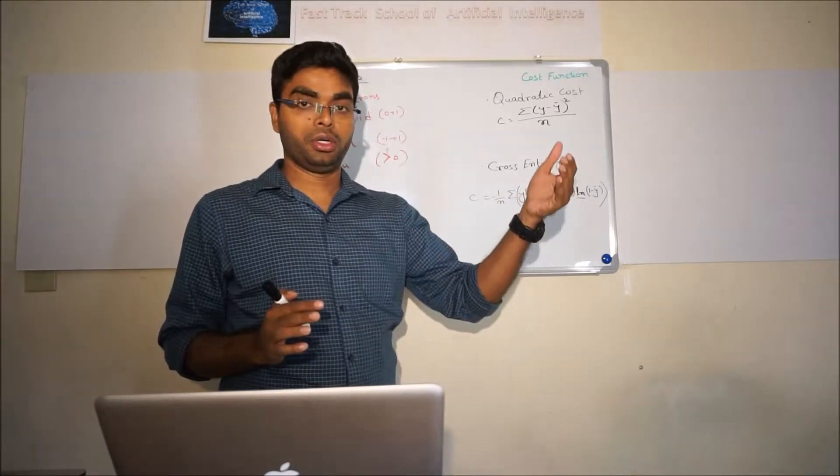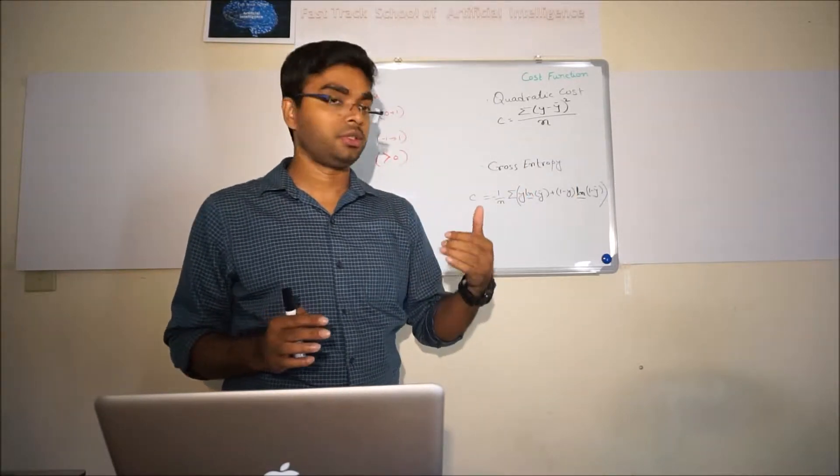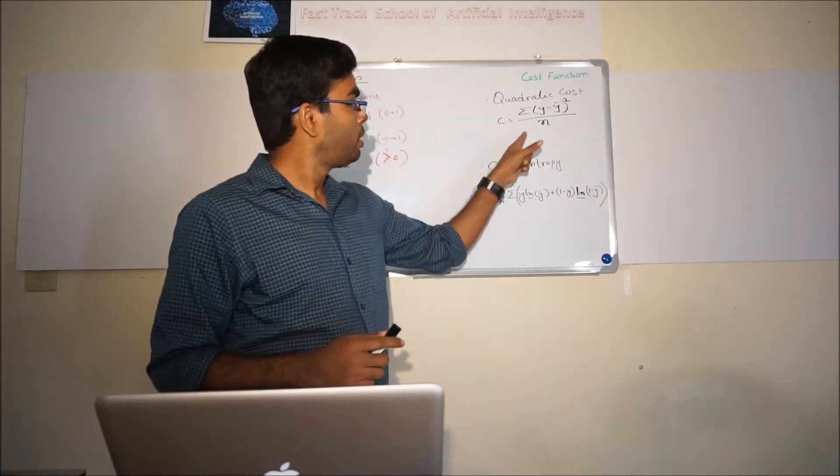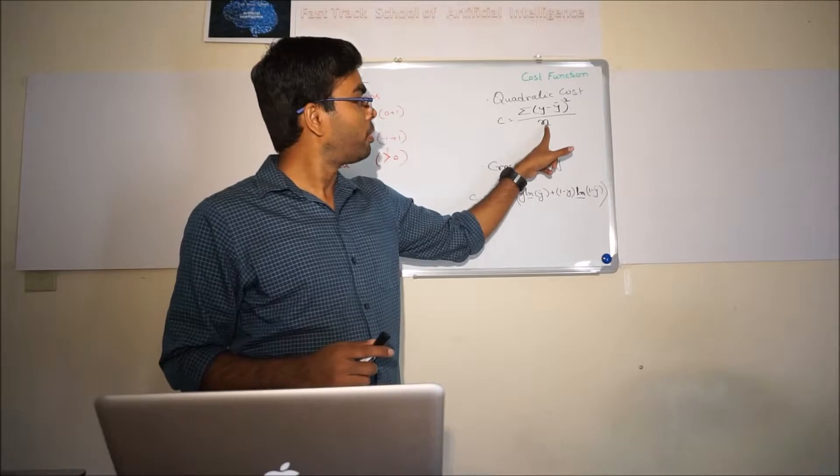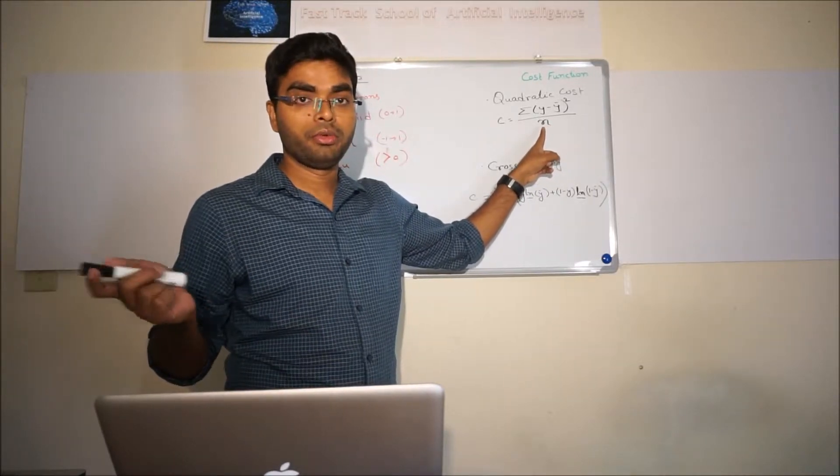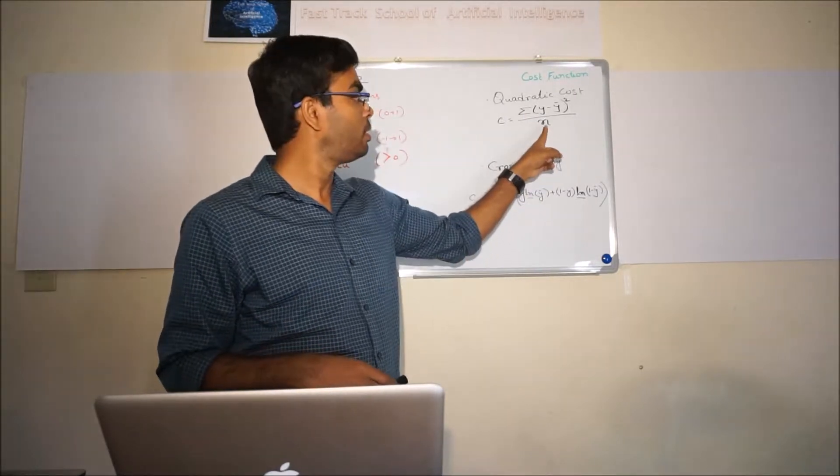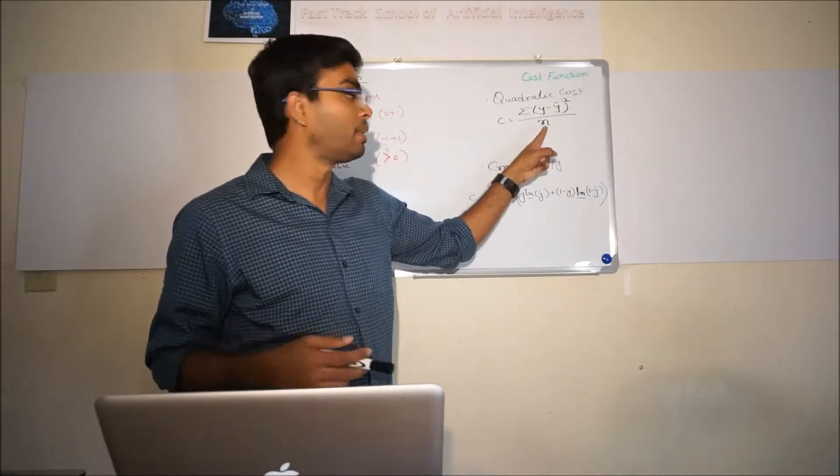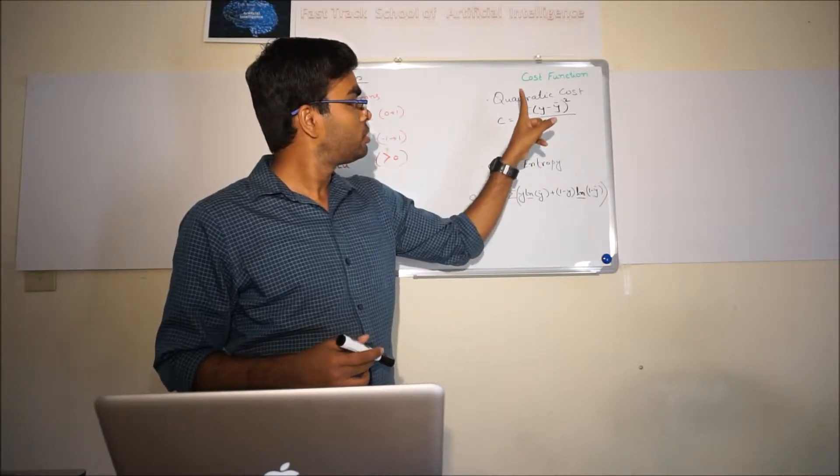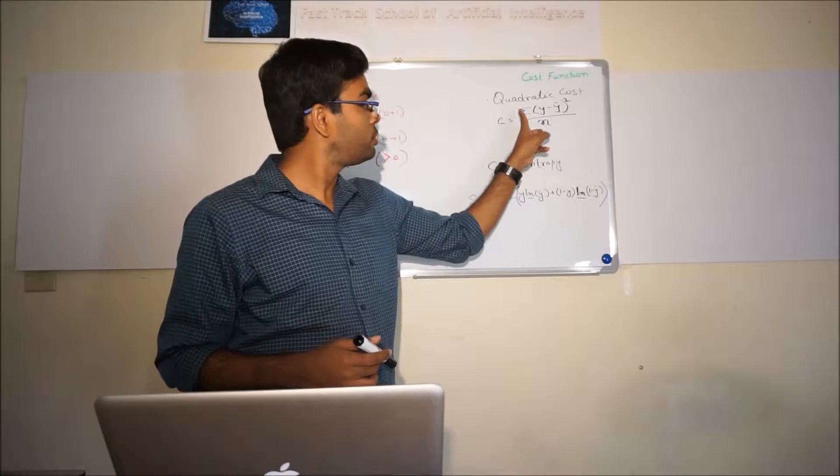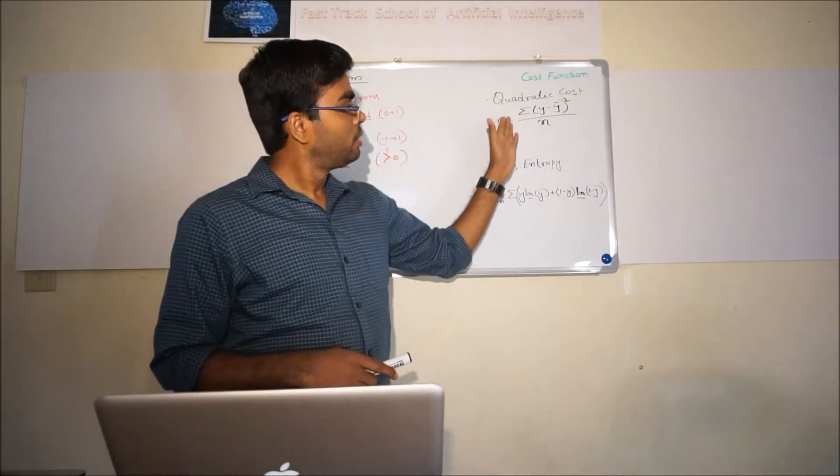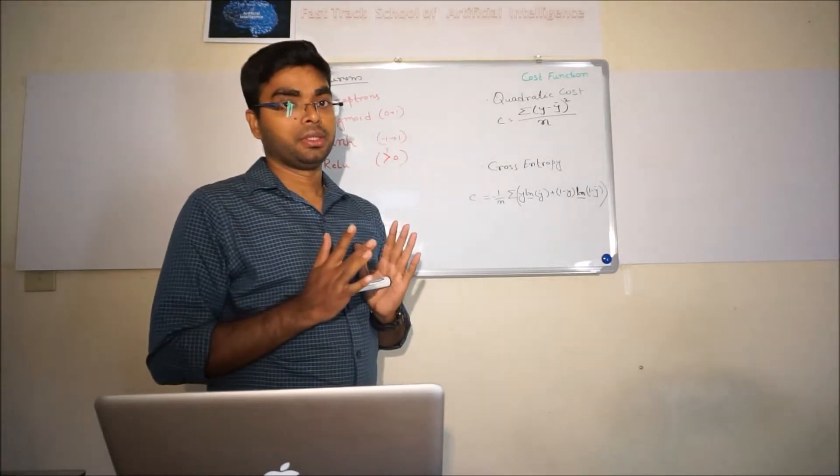Then we're taking the sum of all these errors for the training dataset or test dataset, for each and every example we're training. We divide it by the number of training data or validation records or samples, and we get the average mean square error.